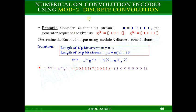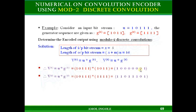As the name 'convolution encoder' implies, you need to perform modulo-2 discrete convolution on the input bit stream with the generator sequence. By convolving the input u with generator sequence g1, you can get output v1. Similarly, you can find output v2 by convolving the input bit stream u with the generator sequence g2, which has all ones.